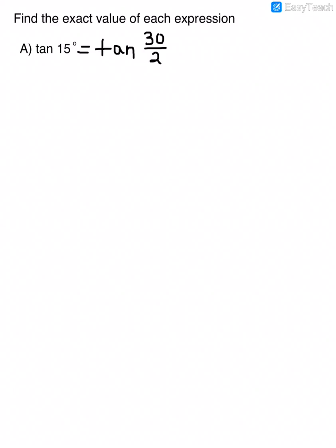The half angle identities for tangent have three different choices, so it doesn't matter which one you use. I'm going to use the one where tangent of a/2 equals the sine of a — in this case our a is 30 degrees — divided by 1 plus the cosine of a, which again is 30 degrees.